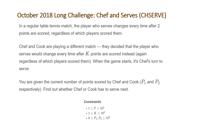The problem states: in a regular table tennis match, the player who serves changes every two points scored, regardless of which player scored them. Chef and Cook are playing a different match — they decided the player who serves would change every K points scored instead. When the game starts, it's Chef's turn to serve. We are given P1 and P2, the current points scored by Chef and Cook respectively, and asked to find out whether Chef or Cook has to serve next.